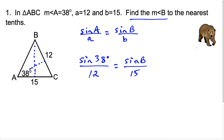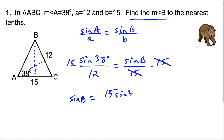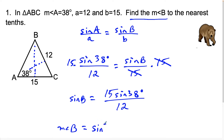Now we do a little algebra to get angle B by itself. We multiply both sides by 15 — those terms cancel — and we get sine of angle B equals 15 sine 38 degrees over 12. To solve for the measure of angle B, the opposite of sine is sine inverse, so we apply sine inverse to the entire fraction: sine inverse of 15 sine 38 degrees over 12, and the rest is calculator work.